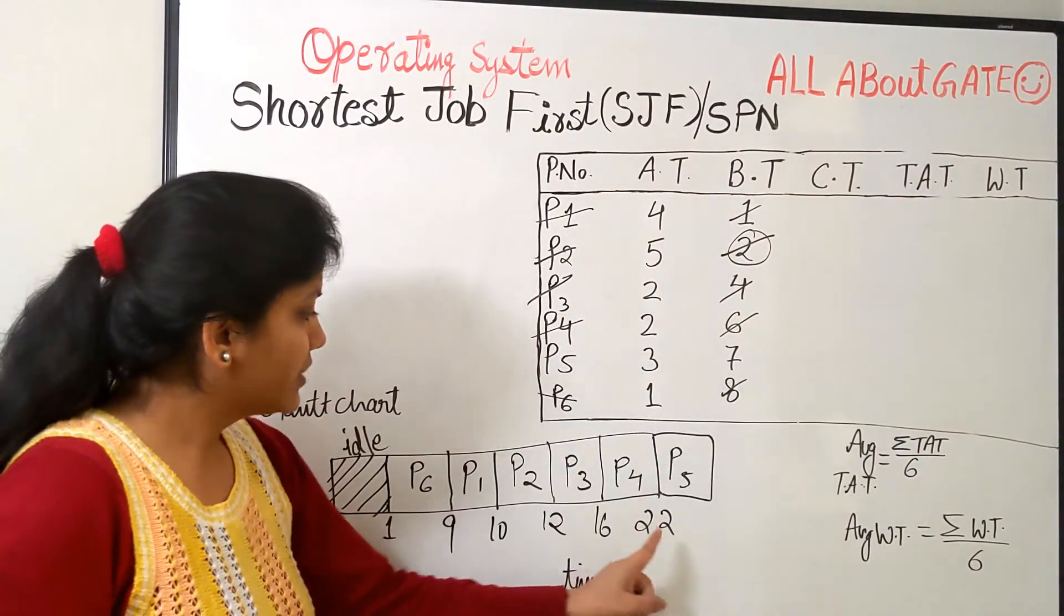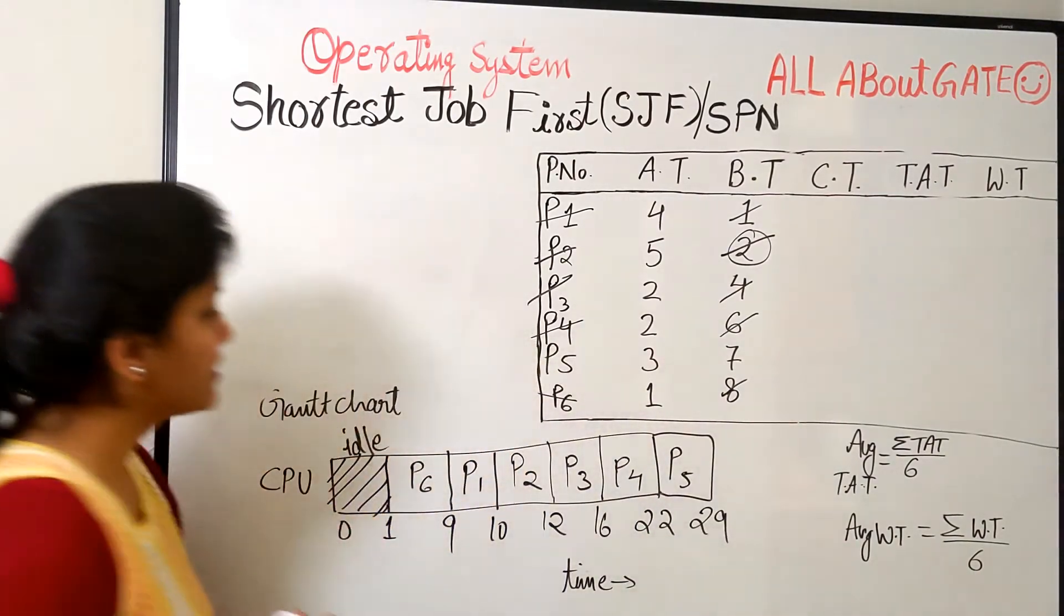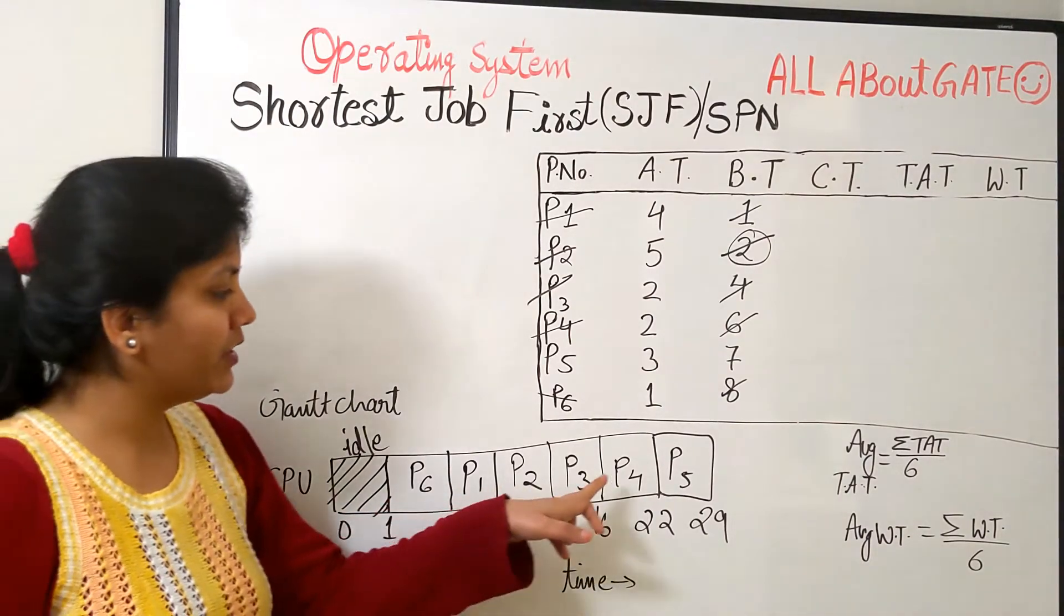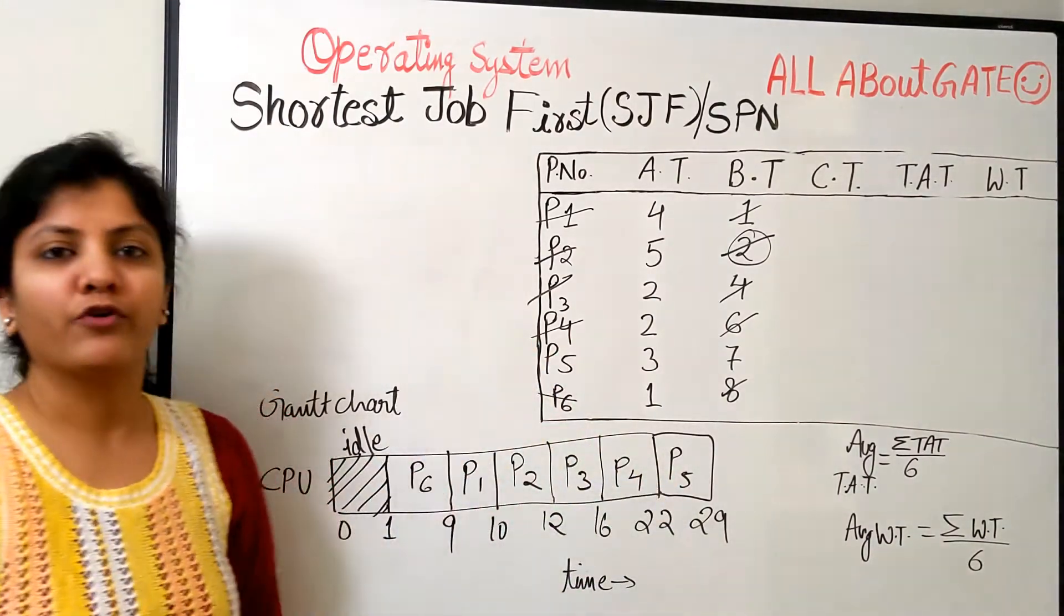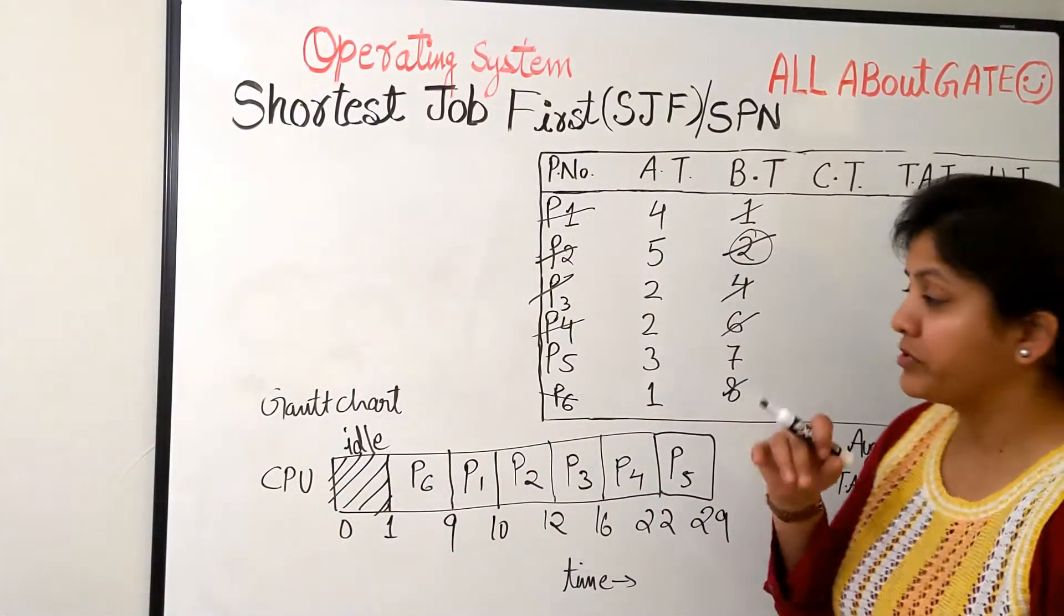And it needs 7 bursts. So 22 plus 7 makes 29. So this is how the scheduling is done. We have P6, P1, P2, P3, P4 and P5 followed by like this. So once we have scheduled it, let's quickly find out these times for the processes.